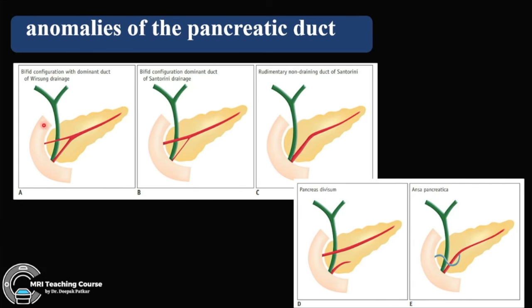Anomalies of the pancreatic duct categories include: a bifid configuration with dominant duct of Wirsung, where the main duct is dominant and the duct of Santorini is non-dominant; the same bifid configuration with dominant duct of Santorini, where the minor duct is dominant; rudimentary non-draining duct of Santorini; and what we normally look for — pancreatic divisum and ansa pancreatica.